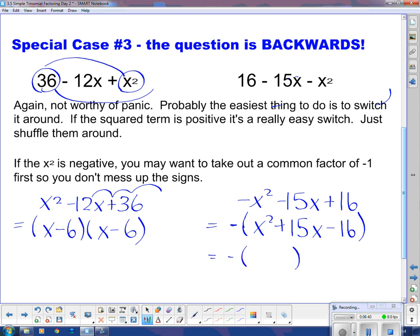So now I'm going to put down my two sets of brackets. We get x's at the front. Now our two numbers have to multiply to 16 and subtract to 15. So the two numbers that multiply to 16 and subtract to 15 are 16 and 1. And of course this tells me that I had to have had more positives than negatives. So the 16 is positive and the 1 is negative.